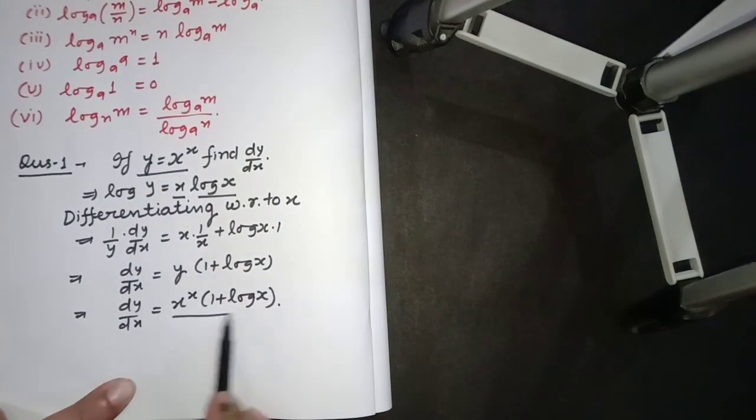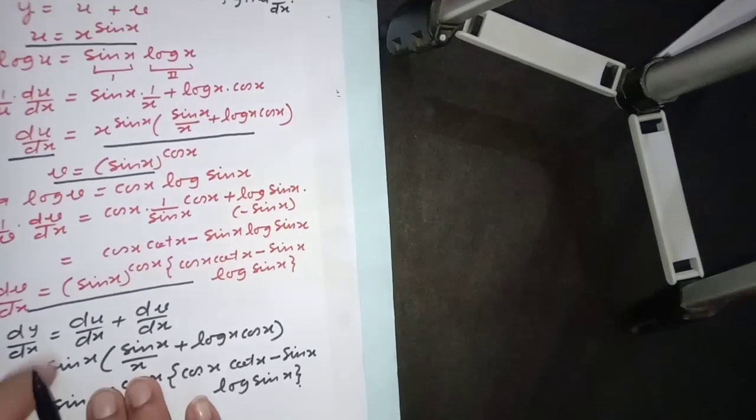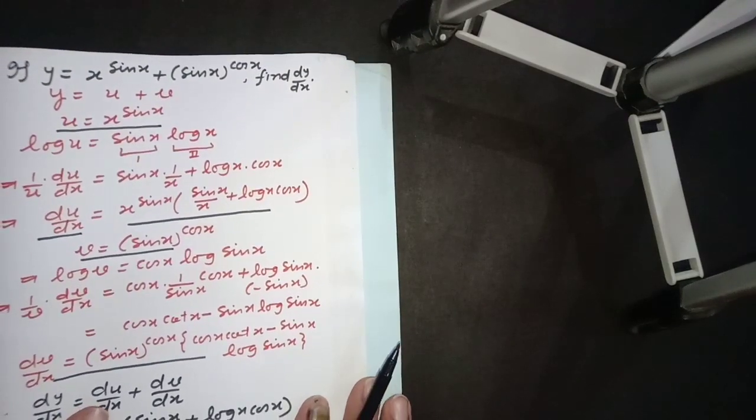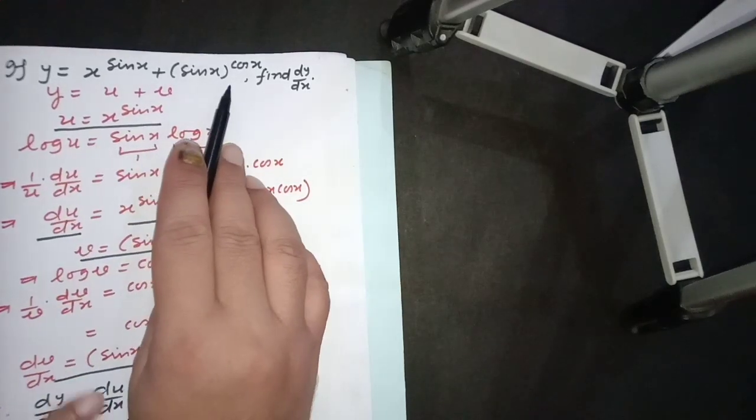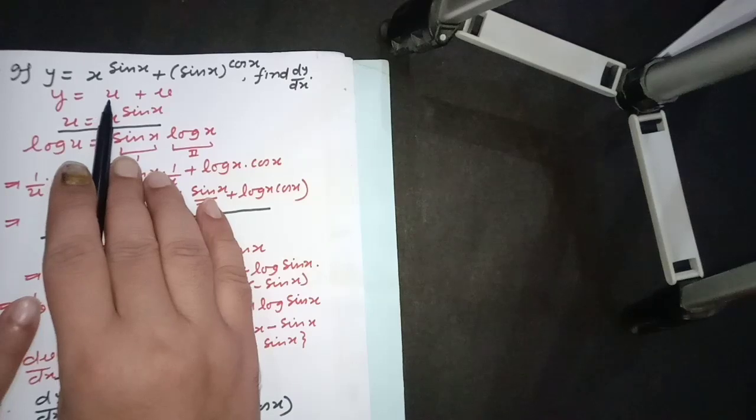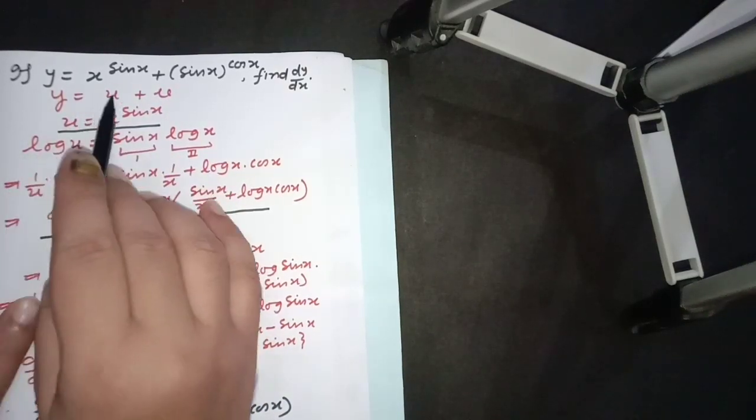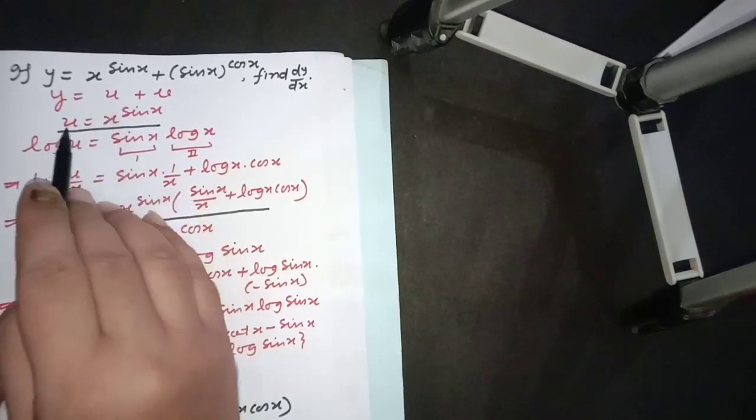Now the second problem - this question is also asked in long answer questions. Here we have y = x^(sin x) + (sin x)^(cos x), and we have to evaluate dy by dx. So there are two functions - let them u and v - and same process will be repeated here as we studied in previous question.